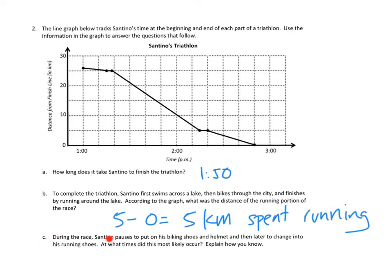Let's take a look finally at 2C. During the race, Santino pauses to put on his biking shoes and helmet, and then later to change into his running shoes. At what times did this most likely occur? Wow, they want us to do that without video. Well, I'm remembering that we thought this was the swimming part, and then we noticed that there was some time when he wasn't making any progress. I bet that's the changing time right there. And then he did some biking. And then again, there's a little bit of time there where he doesn't seem to be making any progress toward the finish line, and then he does the running. So I bet those are the two points at which he was doing his changing.